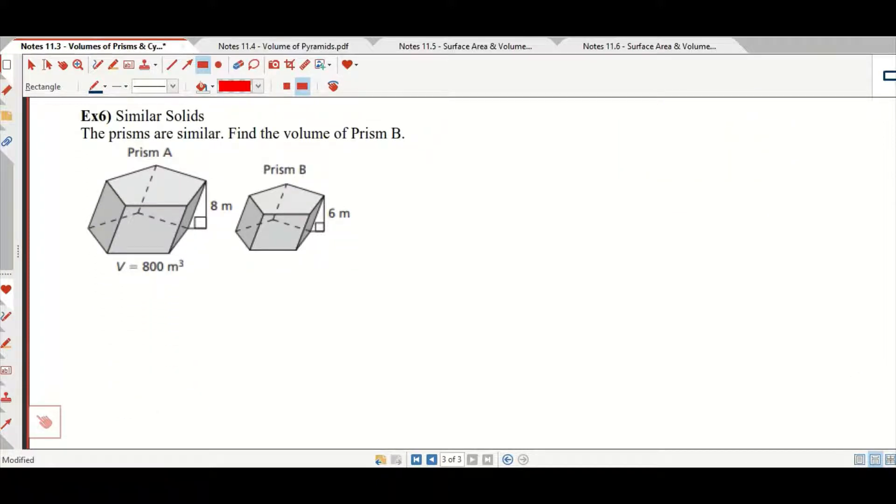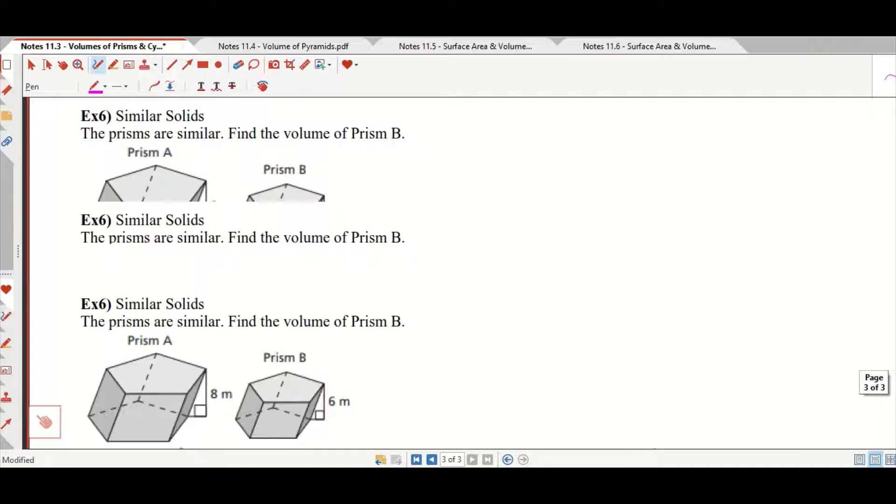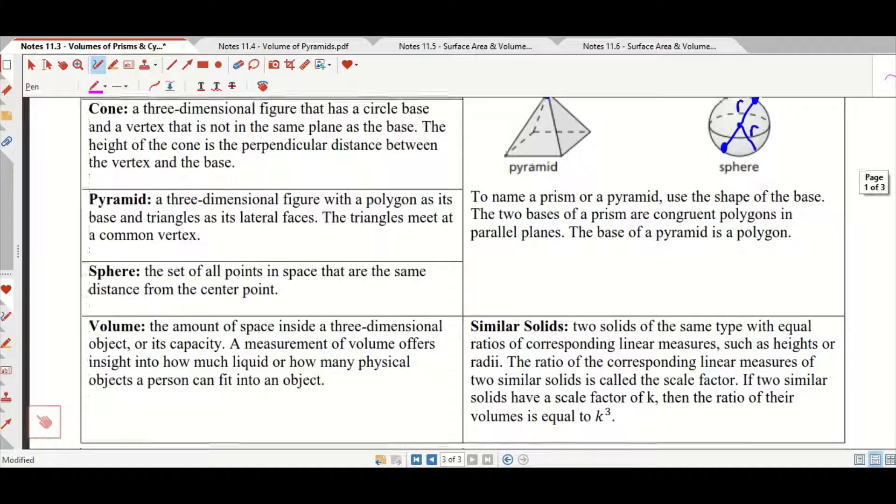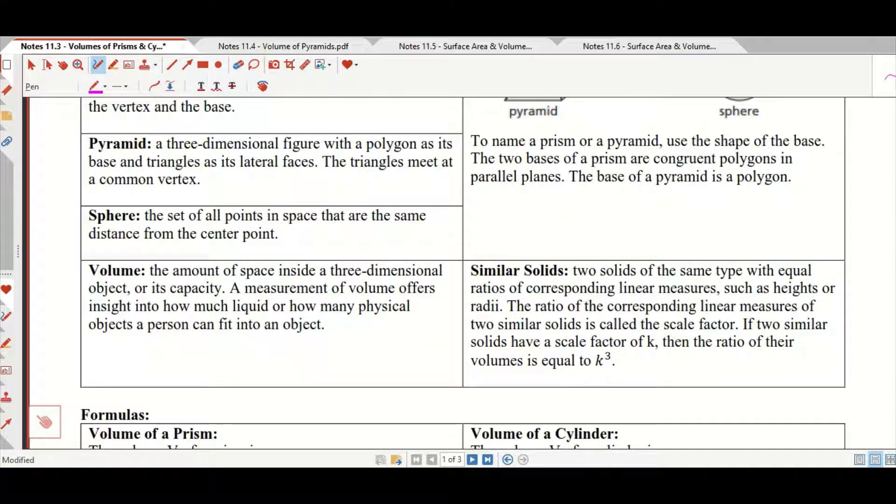Similar solids. If the prisms are similar, find the volume of prism B. So, they don't give us a whole lot of information here. Here's the deal though. Similar solids: two solids are the same type with equal ratios of corresponding linear measures such as heights or radii. The ratio of corresponding linear measures of two similar solids is called the scale factor. If the two solids have a scale factor of k, the ratio of their volumes is equal to k cubed.